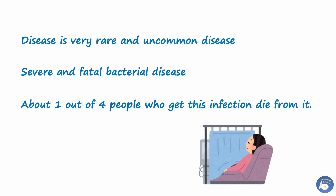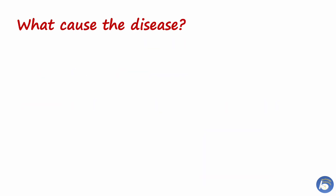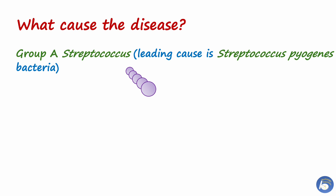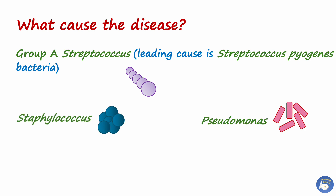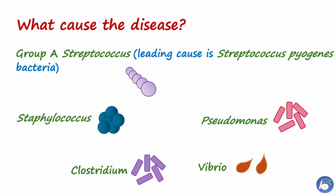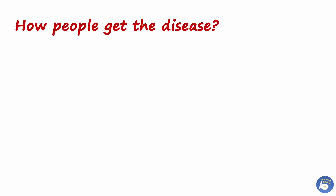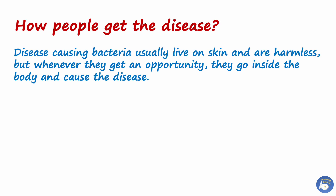Flesh-eating disease is rare but it is severe and fatal. About one out of four people who get this infection die from it. The disease is caused by Group A Streptococcus, with the leading cause being Streptococcus pyogenes. Other bacteria that can also cause the disease include Staphylococcus, Pseudomonas, Clostridium, and Vibrio. Sometimes all these bacteria together can cause the disease, so the agent can be monomicrobial or polymicrobial.